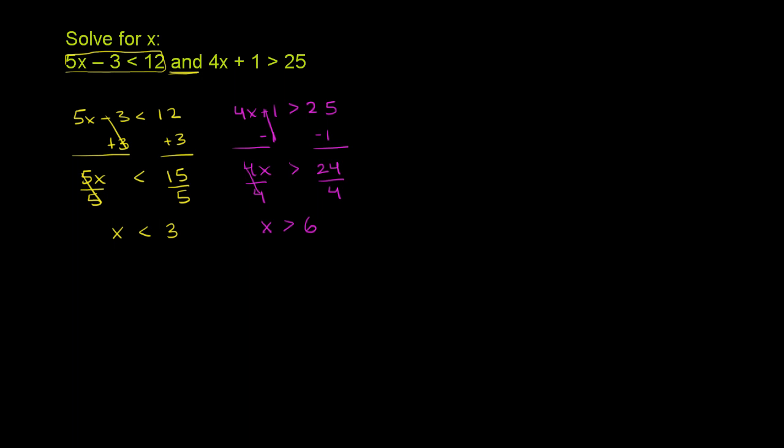And remember, there was that 'and'. So x has to be less than 3 and x has to be greater than 6. Already your brain might be realizing that this is a little bit strange.